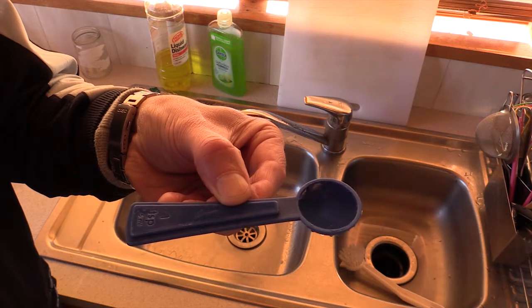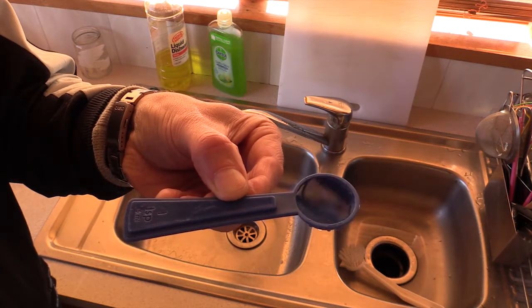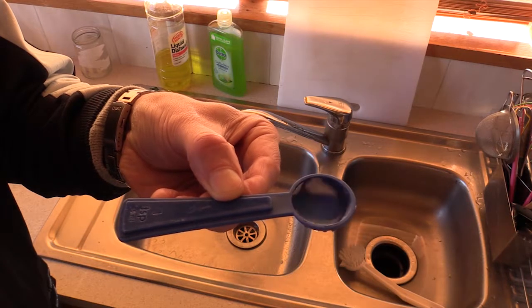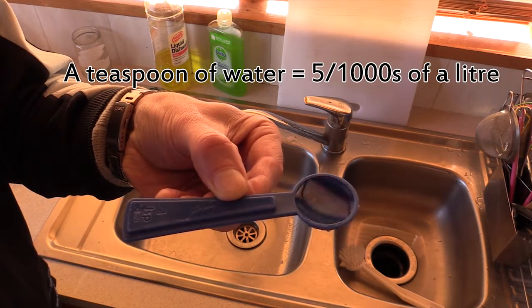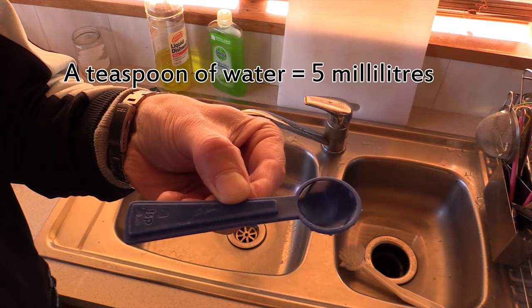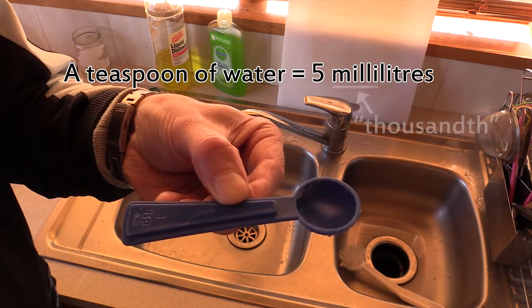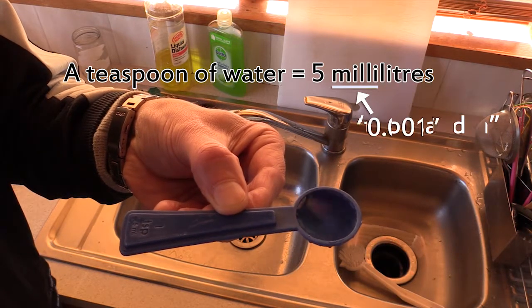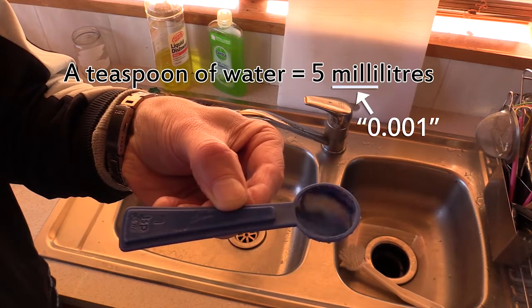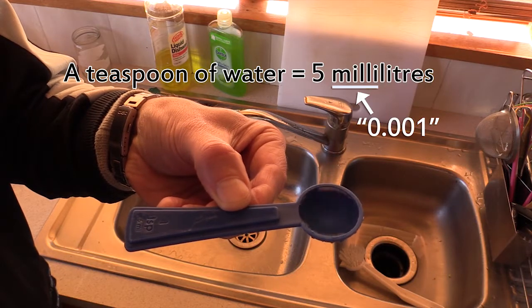At the opposite end of the scale, if you're talking about a volume of water that's much smaller than a litre, say a teaspoon containing five thousandths of a litre, you can say five millilitres. The prefix milli in this case means thousandth or 0.001 if you prefer decimals.